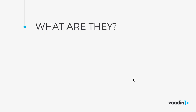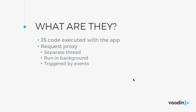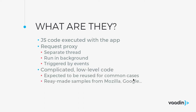In more detail, a service worker is JavaScript code executed with your application acting as a request proxy. It runs in a separate background thread and is triggered by various events. It is quite low-level code and is expected to be reused from libraries — for example, if you need push support, you grab a service worker library for that. There are ready-made samples from Mozilla and Google. The drawback is limited browser support, though this is expected to improve.